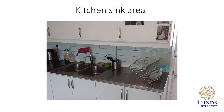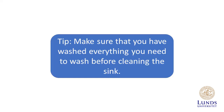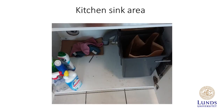Kitchen sink area: remove everything on the sink top and wipe the area clean. Use your dish brush around the faucet and in the sink with some dish detergent. Tip: make sure that you have washed everything you need to wash before cleaning the sink. Also move everything out from under the sink and make sure to clean the receptacles and floor there. The insides of the doors usually also need to be wiped clean.